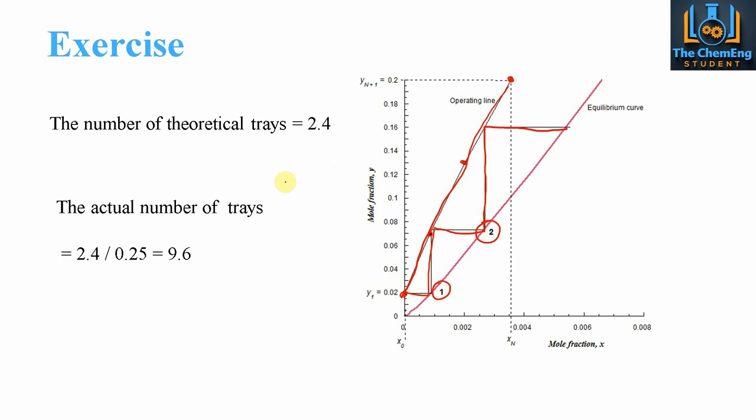But there's one thing we have to consider here. Is that our efficiency is 25%. So we have to divide this by 0.25. And that will tell us that our actual number of trays required is 9.6. So therefore, we actually need 10 trays in order for this to reach that level of extraction.